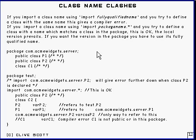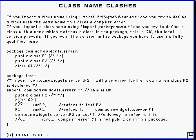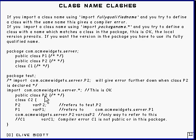Here's an example to illustrate that. Here's a package with two public classes and a non-public class. And a second package called Test, and down here inside Test it declares a class P2. Now, if we import P2 from this package, then when the compiler sees that we're defining P2 down here, it will give an error at that point.